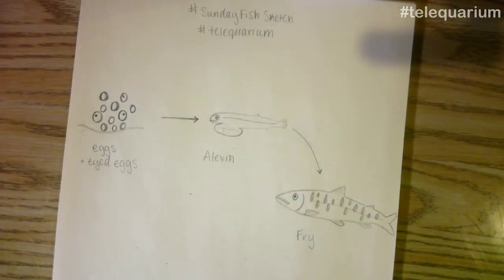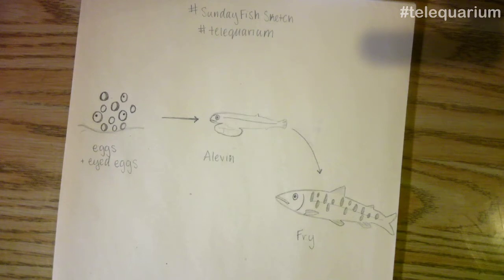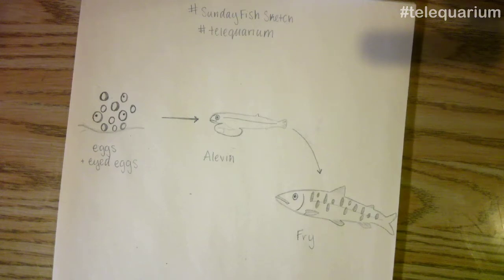So here's what I have — some eggs and eyed eggs, moving on to the alevin with the little yolk pouch on the bottom, and then a fry with those banding patterns. Those are your first three stages of the salmon's life cycle. From there it'll move on through a couple more stages to become that breeding adult.